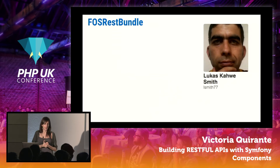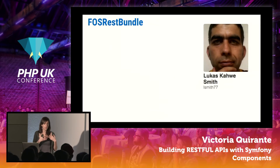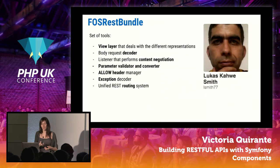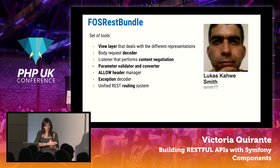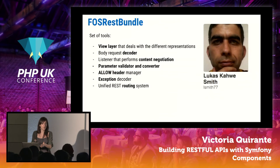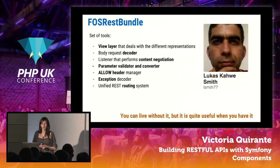Next bundle is FOS REST bundle. It's not one tool — it's more like a toolbox, providing a set of tools useful for building your API. It helps a lot when dealing with different representations of a resource. It has a body request converter and a listener that performs content negotiation to decide which format is appropriate. These are tools you can live without if you don't know them, but once you start using them you can't picture building an API without them.